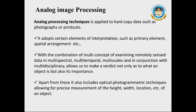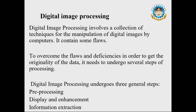Analog image processing also includes optical photogrammetric techniques allowing for precise measurement of height, width, and location of an object. In digital image processing, it involves a collection of techniques for manipulation of digital images by computers. To overcome flaws and get the original data, digital image processing undergoes three general steps: pre-processing, display and enhancement, and information extraction.